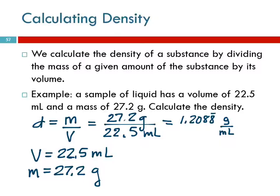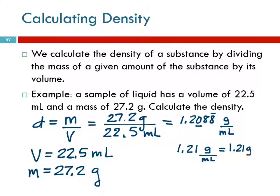Now significant figures: we're doing division. 27.2 has three sig figs, and 22.5 has three, so we should have three. We round off to 1.21 — that's to the right of the decimal point, so we don't need scientific notation. The answer is 1.21 grams per milliliter, which is the same as 1.21 grams slash milliliter. Should be fairly straightforward.